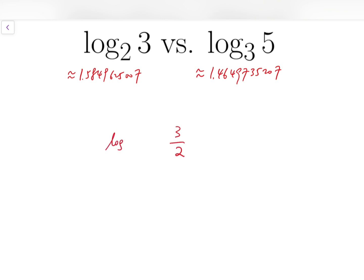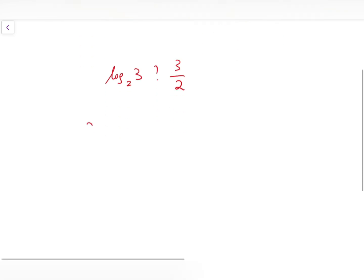So if we compare log base 2 of 3 with 3 over 2, then you can quickly see that 2 to the power of 3 over 2 is actually equal to 2 times square root of 2, and you know that this must be less than 3. Either you remember that the square root of 2 is approximately 1.414, or you simply square these two numbers. 2 times root 2 all squared is 8, while 3 squared is 9.